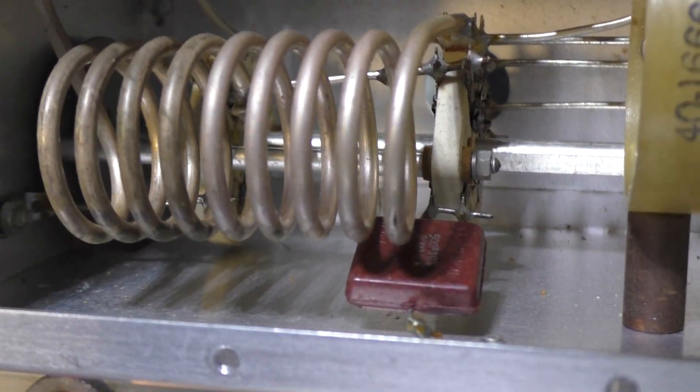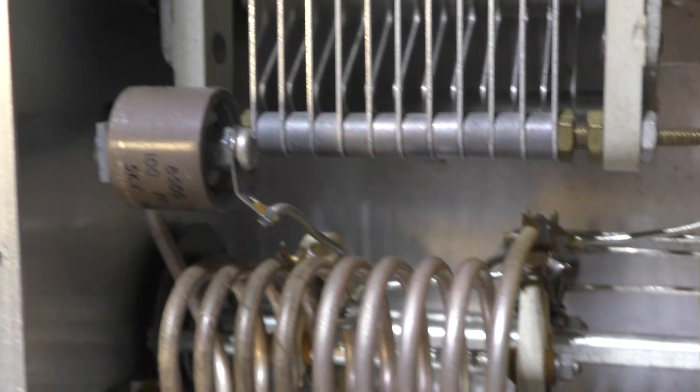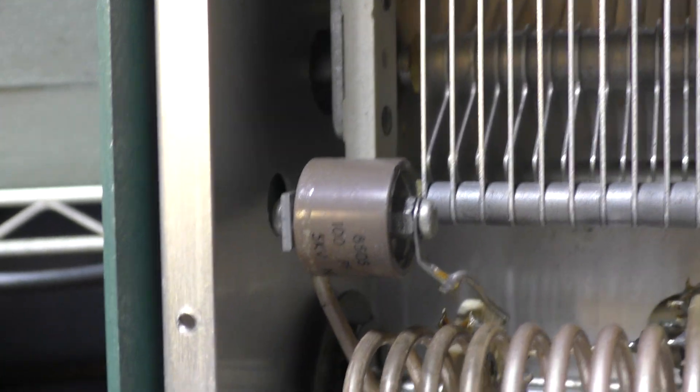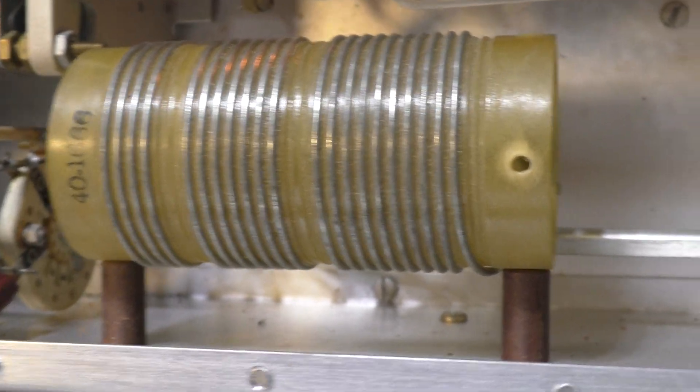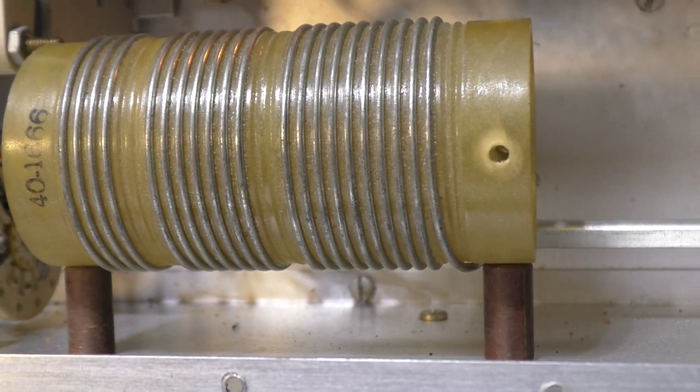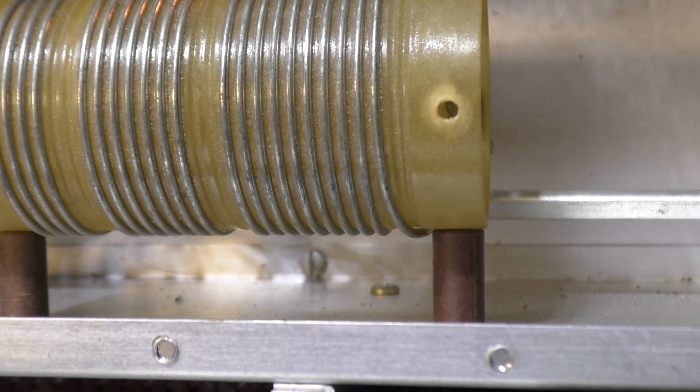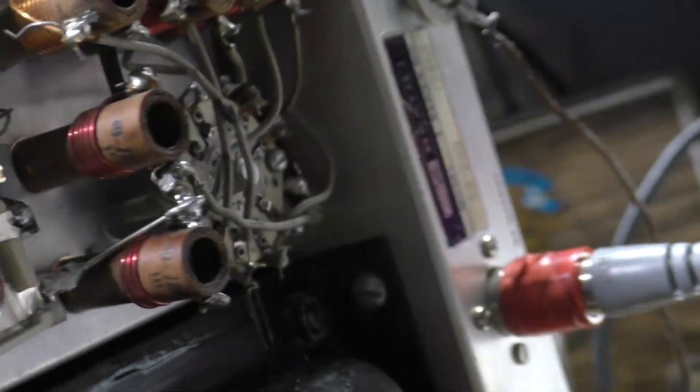As you can see all the components are in there. This is the tank coil, the extra cap that is switched in for like 40 and 80 meters, another extra cap that is switched in, the band coil for the like the higher bands 20, 40, and 80 meters, and then all the input tuners for the multi band.